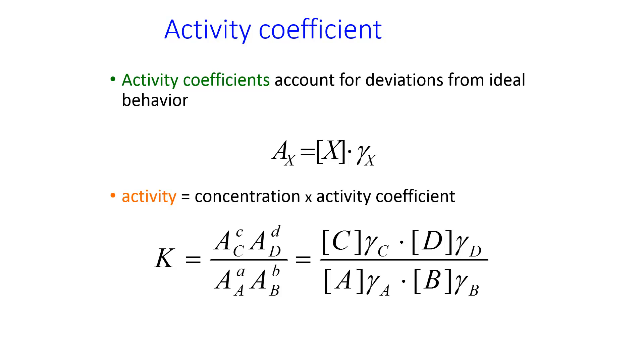The real equation is the activities of each raised to their stoichiometric coefficients. And so in the equation here, we have the product concentrations times their activity coefficients divided by the reactant concentrations times their activity coefficients. And all of these should be raised to their stoichiometric coefficients, if there are any.